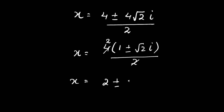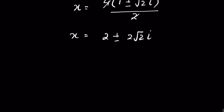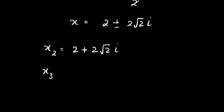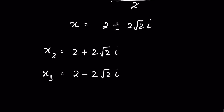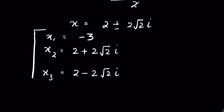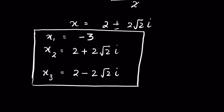So the second value of x is 2 + 2√2 · i and the third value is 2 − 2√2 · i. The first value was x₁ = −3. So these are the three values of x.